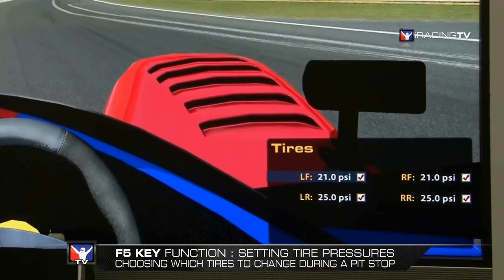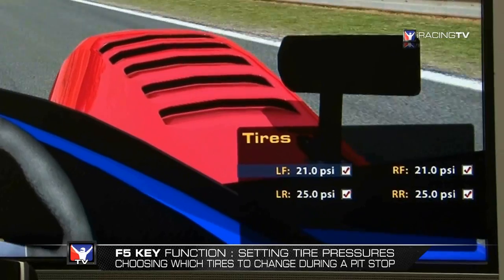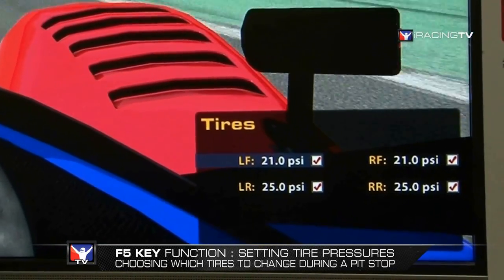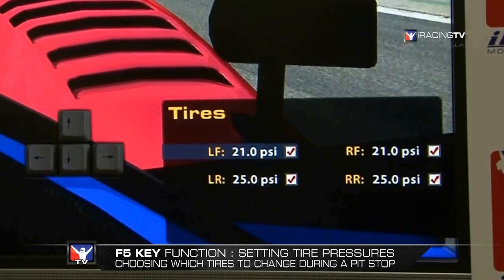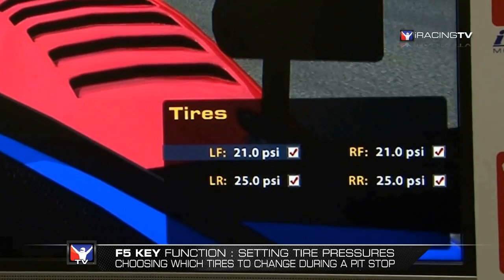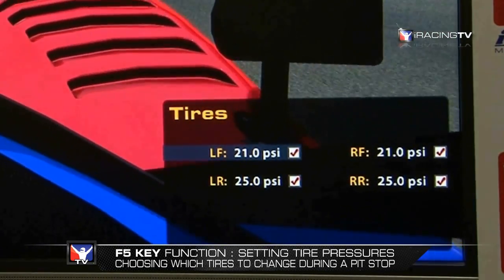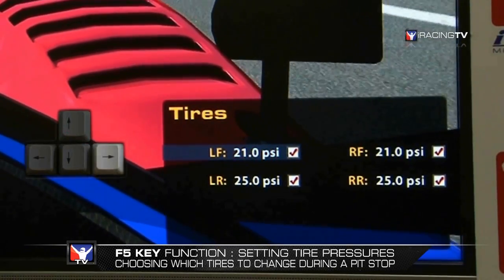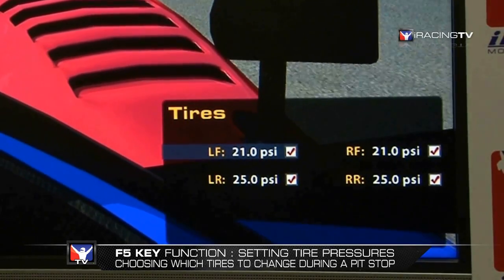F5 deals with tires. The information here is about tires that will go on at your next pit stop. All boxes checked means we're changing all four tires. The PSI displayed is the cold PSI for the new tires. Toggle through the different tires using up and down arrows. Press the spacebar to uncheck a tire if you don't want to change it — press again to change your mind. Use left and right keys to adjust the PSI on the new set of tires. You can make these changes all the way up until you stop in the pit box.